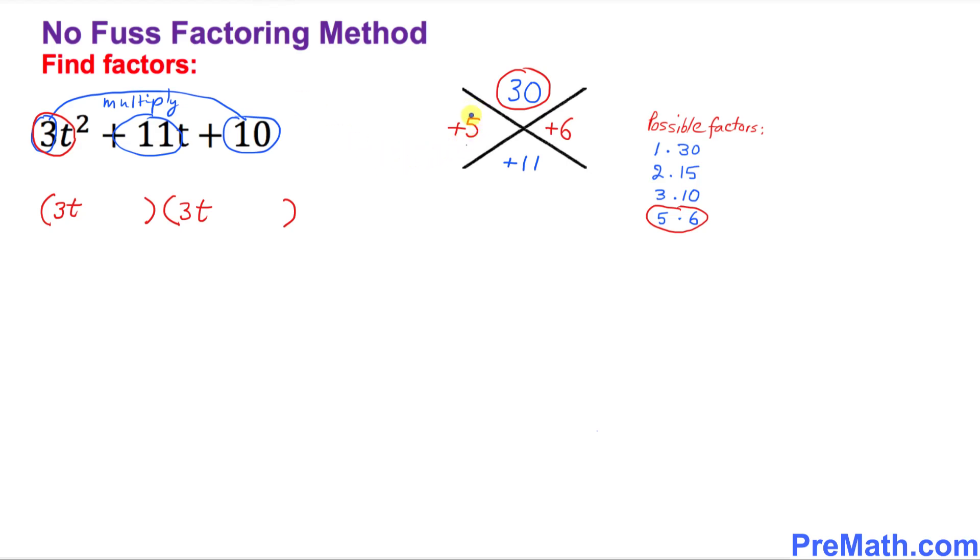Now I want you to look for what were our two factors. Our factors, what we figured out a few minutes ago, was positive 5. You just put down positive 5 right up here, and I want you to put down positive 6 in the second parentheses.